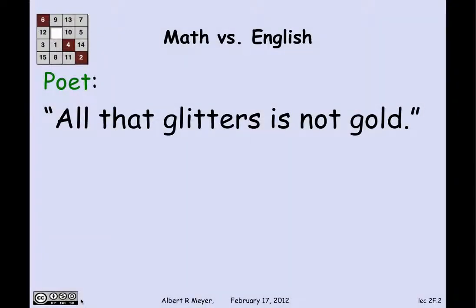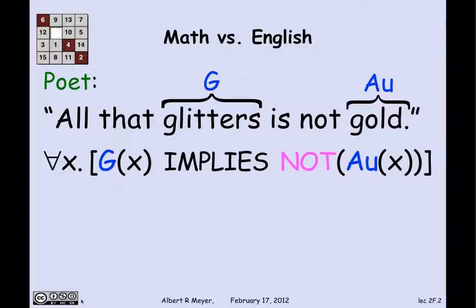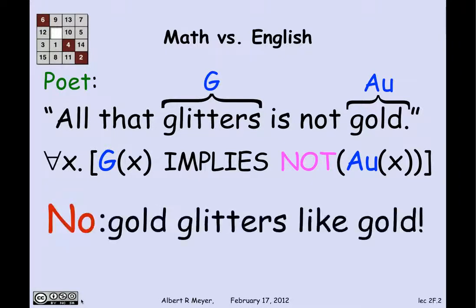Let's look at this phrase in English, where the poet says: "All that glitters is not gold." A literal translation would be: if we let G be 'glitters' and AU be 'gold', then this translates literally as — for every x, G(x) implies not AU(x), meaning if x glitters, then x is not gold. Is that a sensible translation? Well, it's clearly false, because gold glitters, and you can't say that gold is not gold. So this is not what's meant — it's not a good translation.